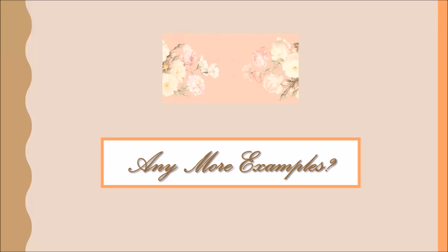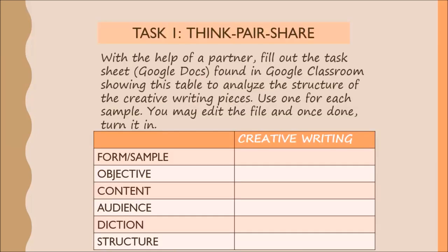Do you have any more examples under those categories of creative writing forms? You may share that and write it in your notebook. Now you have the following tasks. The first task is a think-pair-share task. With the help of a partner, fill out the task sheet or Google Docs found in Google Classroom, showing the table to analyze the structure of the creative writing pieces I've just read and recited. Use one for each sample. You may edit the file and once done, turn it in.